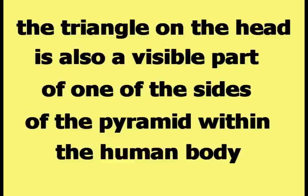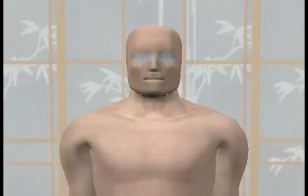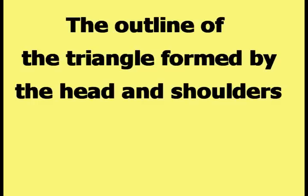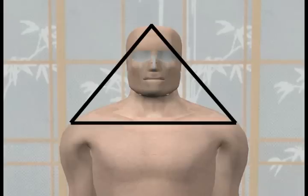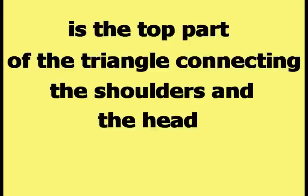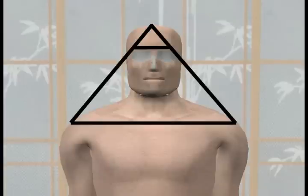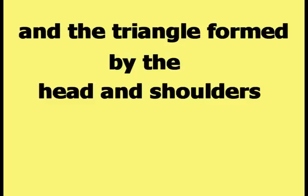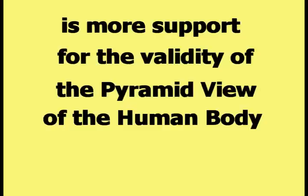According to Happy Theory, the triangle on the head is also a visible part of one of the sides of the pyramid within the human body. This picture shows a close-up of the upper body of the human computer model, with the outline of the triangle formed by the head and shoulders drawn on it. Examination reveals that the triangle on the head is the top part of the triangle connecting the shoulders and the head, as indicated by the line drawn across the head. This connection is more support for the validity of the pyramid view of the human body.